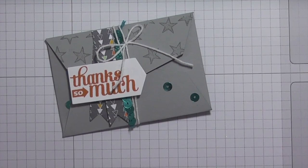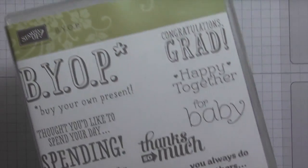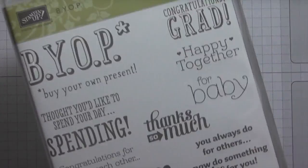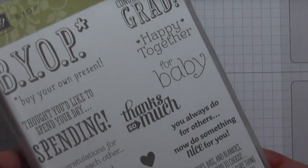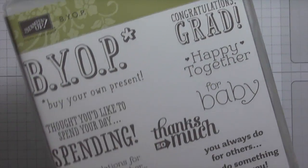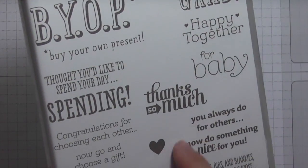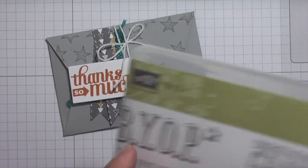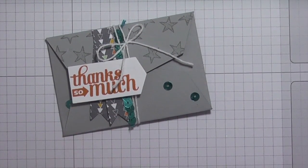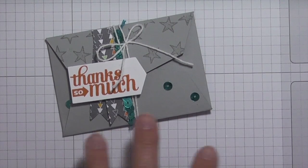I'm using the BYOP stamp set that's in the occasions catalog, and it stands for buy your own present. This is such a fun stamp set to have because you can decorate the front and then there's something to include inside. It's a great stamp set to have, especially with graduation coming up. This is in the occasions catalog.